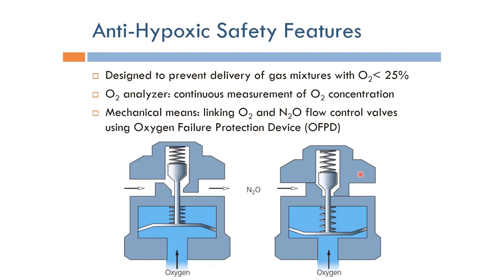The oxygen failure protection device has a valve that is operated using the pressure from the oxygen itself. The oxygen coming in from the cylinders or from the central gas supply is connected to this part here. If the pressure is high enough, this will compress this lever right there and allows room for the nitrous oxide to flow through.